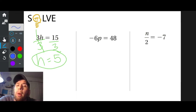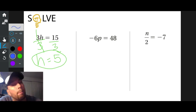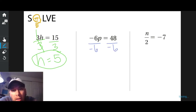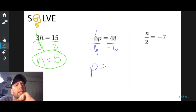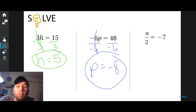Is p all by itself here? No. What's in the way? Negative six. How is negative six in the way? It's being multiplied to p. So how do I get rid of it? Divide — the opposite of multiply is divide. So we divide negative six from both sides. p equals — a positive divided by a negative is a negative, and 48 divided by six is eight. So my answer is negative eight. Is p all by itself now? I'm done.